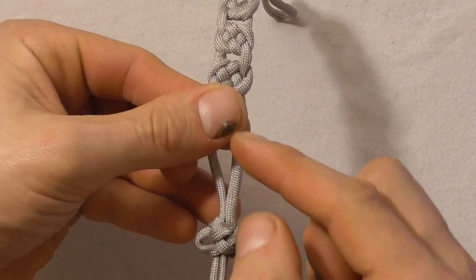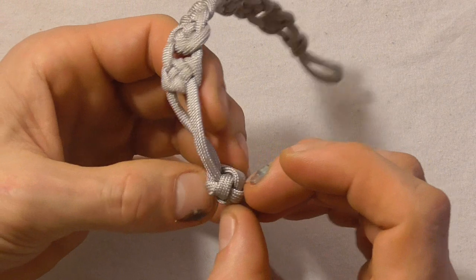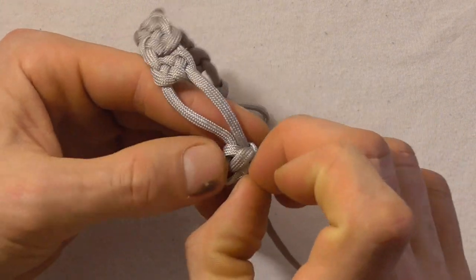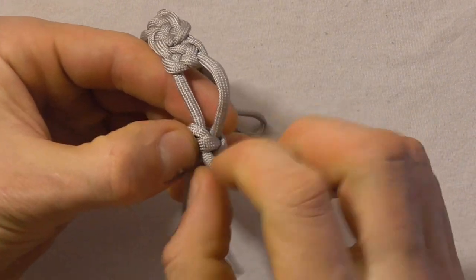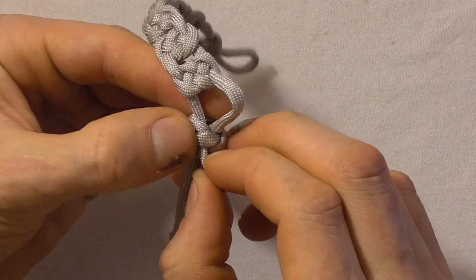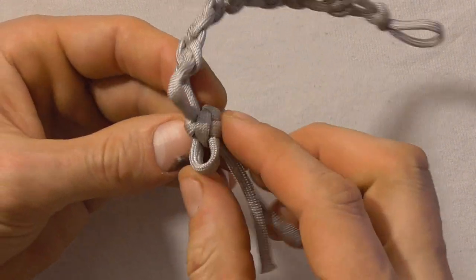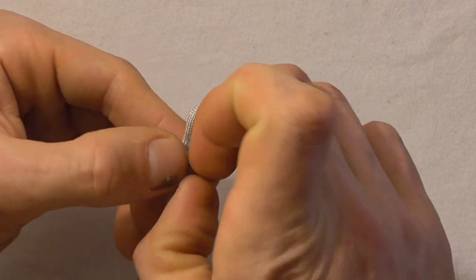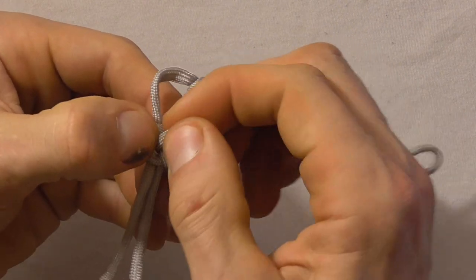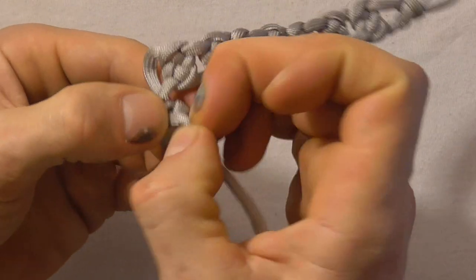And now these legs are a little bit long. So what we're going to have to do is we are going to have to pull slack through. Just shorten one leg and then follow this around the whole knot, just pulling out slack until we get to the end.